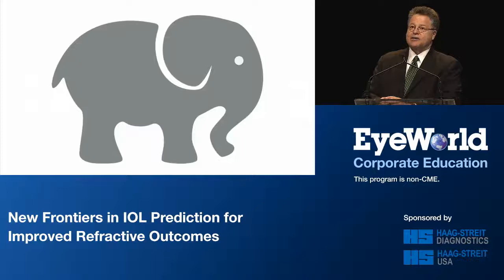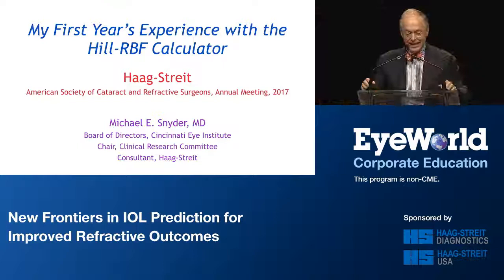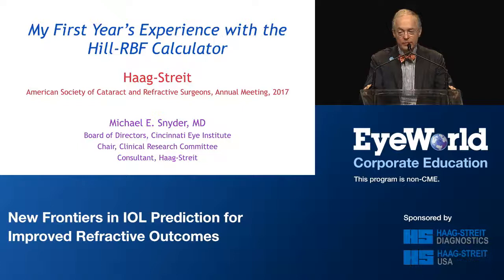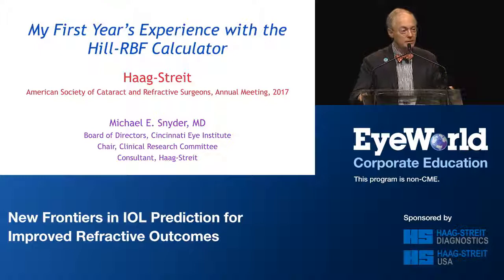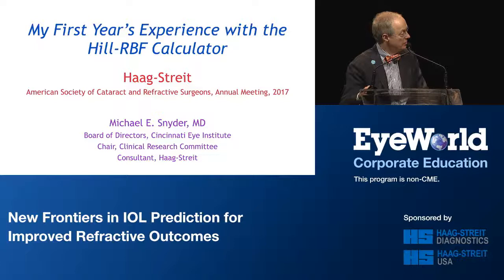Thank you. It's really fun to see how something from outside ophthalmology has been brought in. Warren has spent an enormous number of hours on this and reached out to industry to develop it. We owe a lot to Haag-Streit for making it available not only on their own device but to all of us. Our next speaker is Mike Snyder from the Cincinnati Eye Institute, who will tell us about a clinical trial he's been doing with the Hill RBF formula.